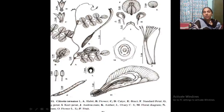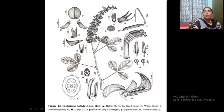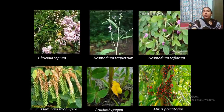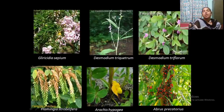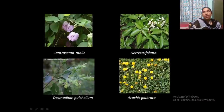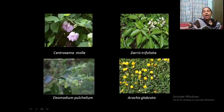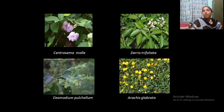The floral diagram shows the fruit, floral diagram, and Clitoria in diadelphous condition, while Crotalaria pallida shows the standard petal, wing petal, and keel petal arrangement. Plants to study include Glyricidia, Desmodium (various species), Flemingia, Arachis, Abrus precatorius (Kunnikuru), Androsema molle, Derris trifoliata, Desmodium pulchellum, and Arachis glabrata found on campus. All these can be used for preparing herbarium specimens.